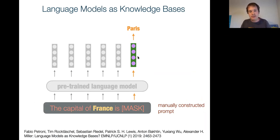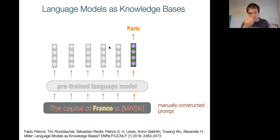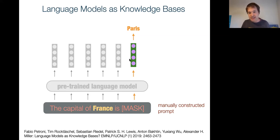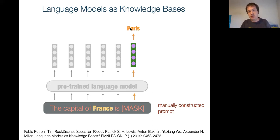From a KR point of view, the interesting thing about language models is that they capture a lot of knowledge, and you can extract that knowledge without any training data. For example, to find the capital of France, you simply input 'the capital of France is [MASK]' to the pre-trained model, and the output probability distribution's most likely word is Paris — as if by magic. You don't have to train your system to do this; it comes for free, and the amount of knowledge captured is quite remarkable.